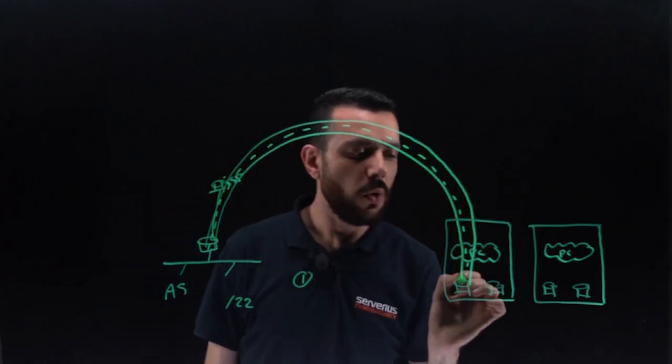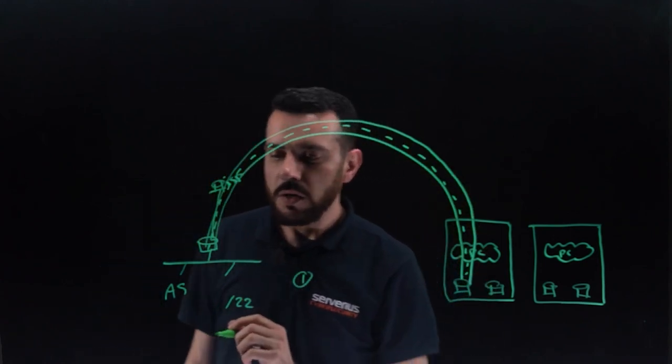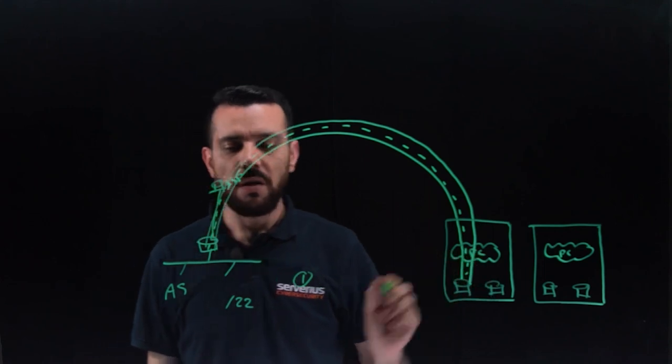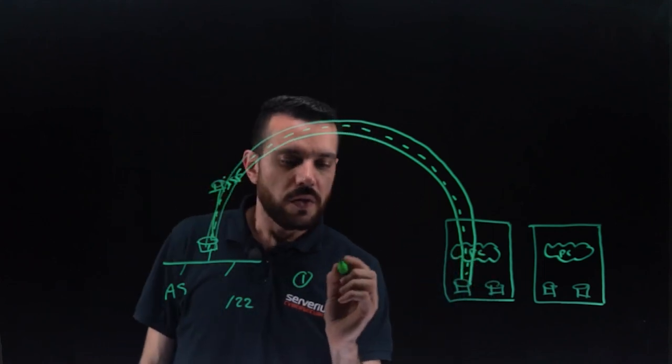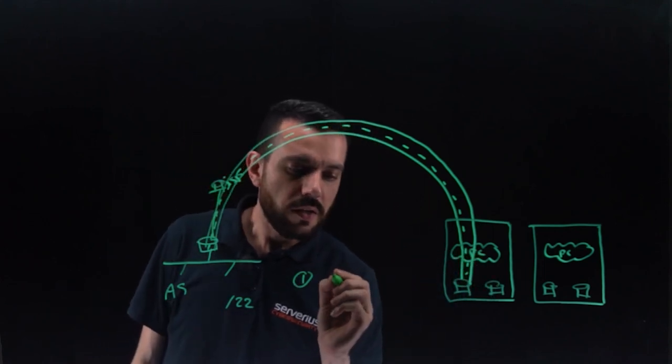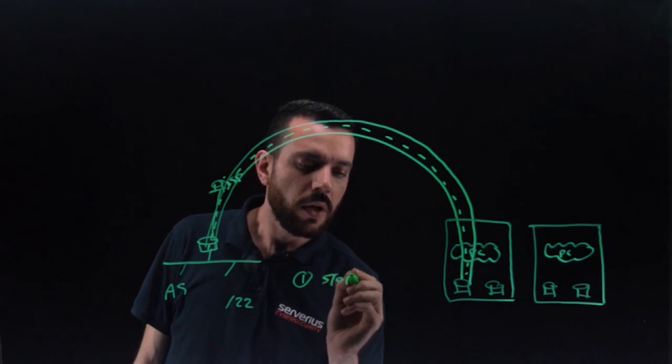The first way, you stop announcing those prefixes to your ISP, and you announce it only through our BGP. So, the incoming traffic comes only through us.